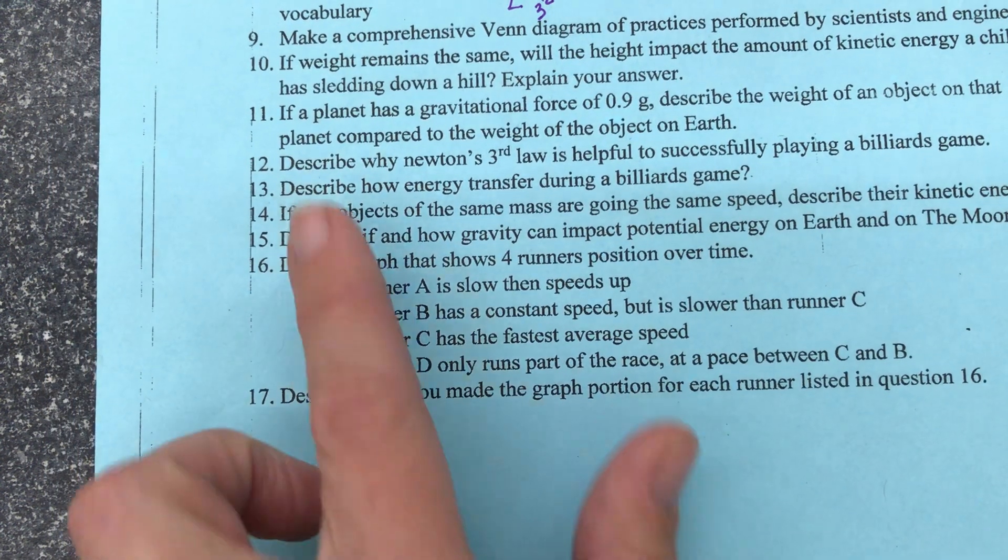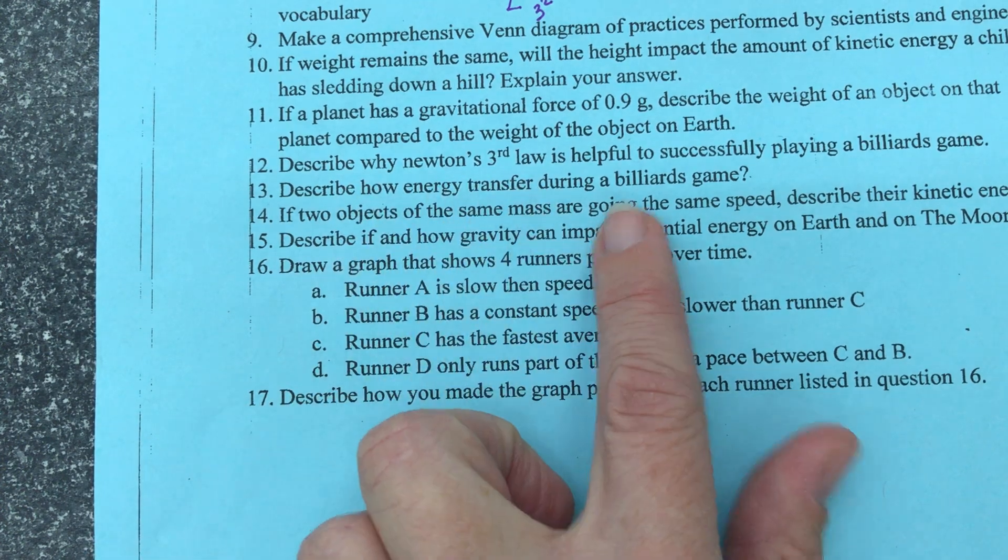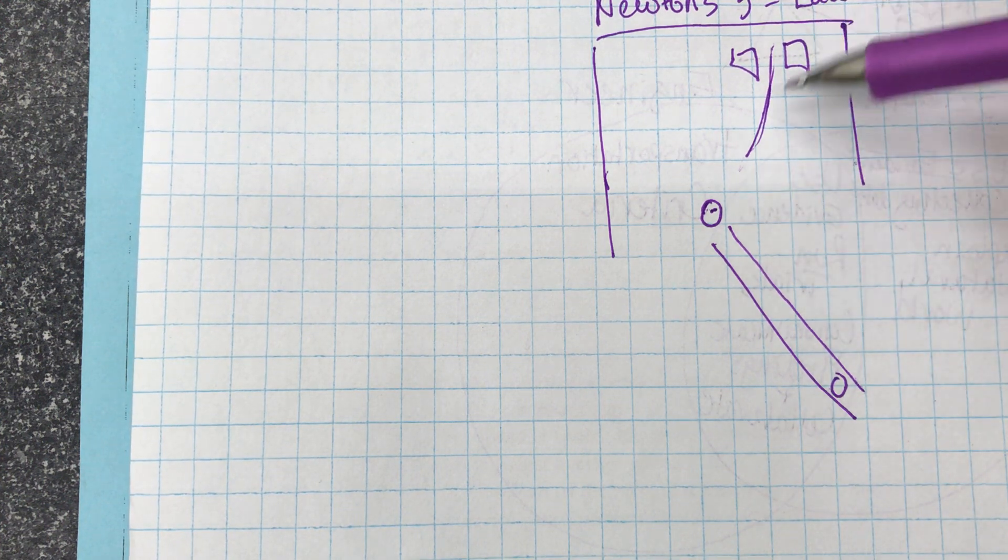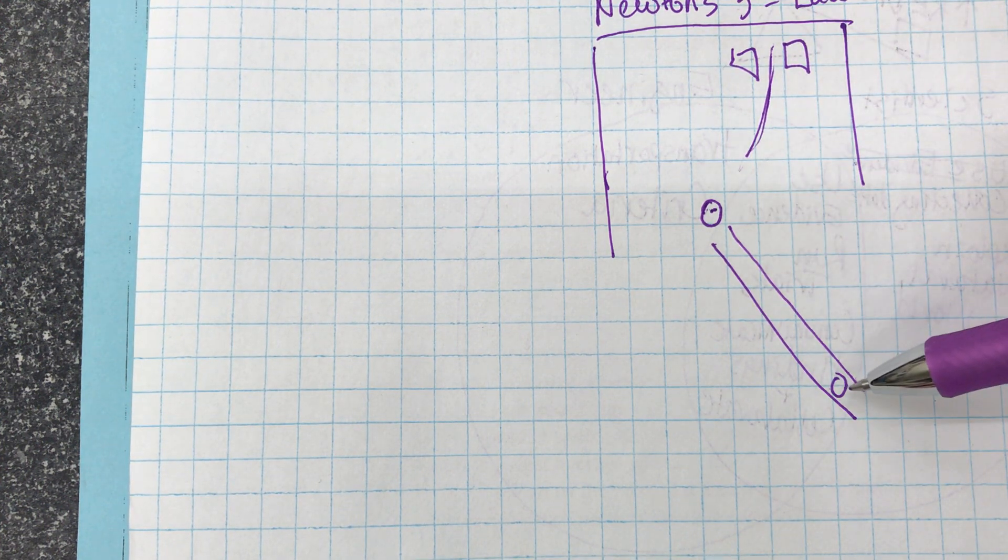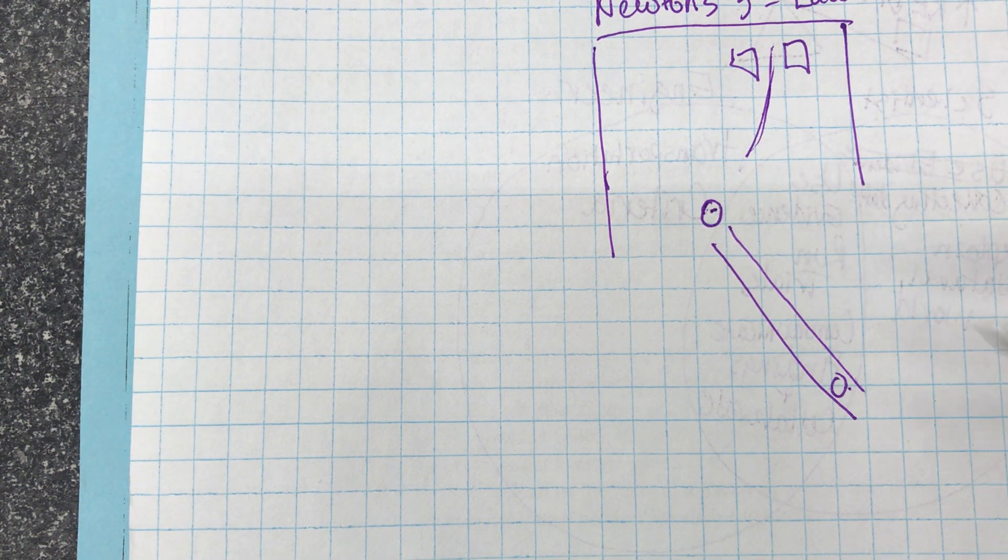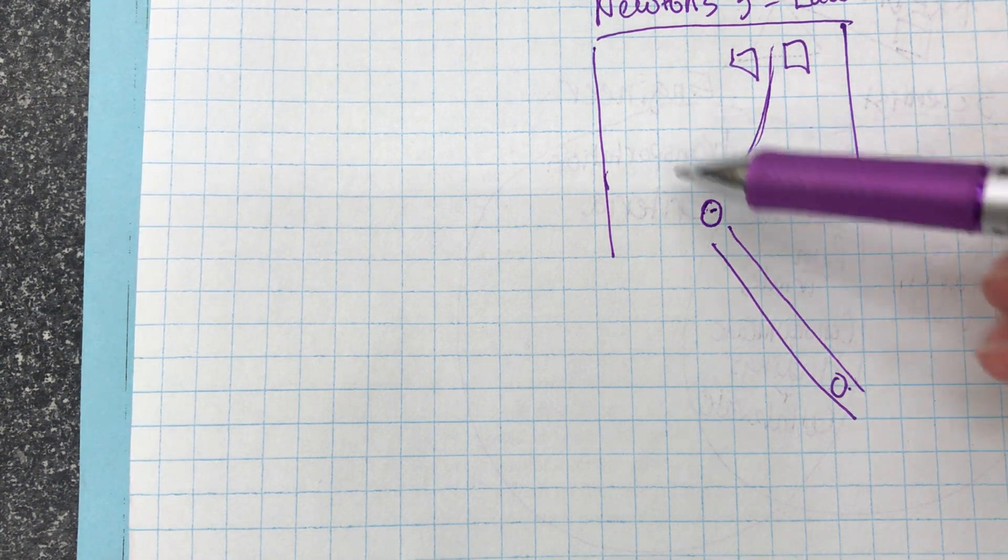And then next one is to show the energy transfer during a billiards game. So where is the energy going in these different places? So we have our ramp cube, our target cube, we have the friction on the felt.